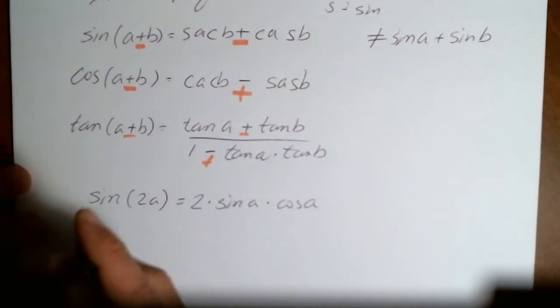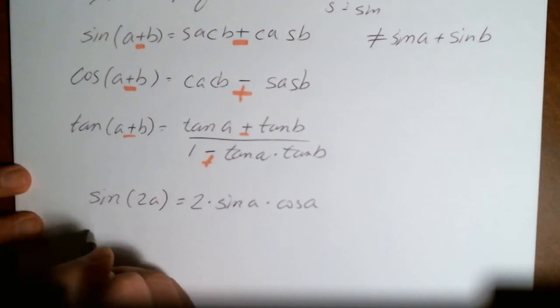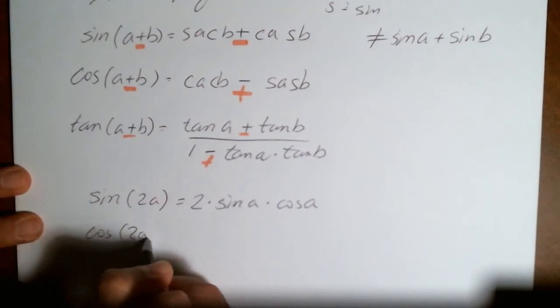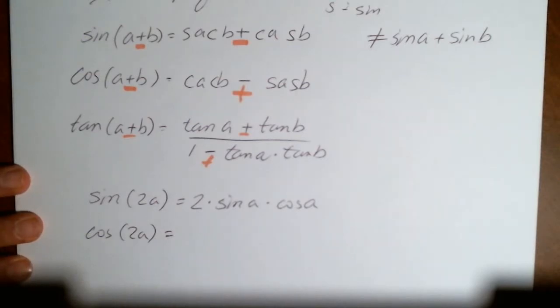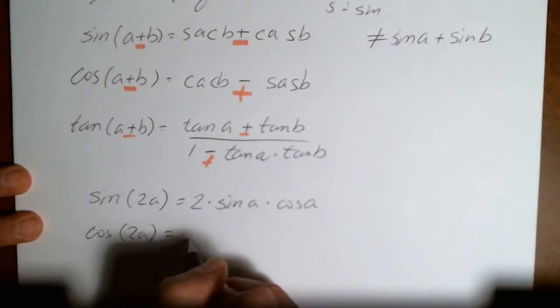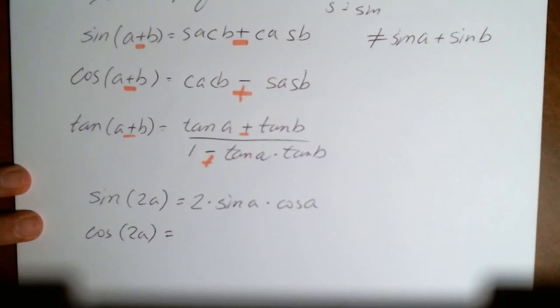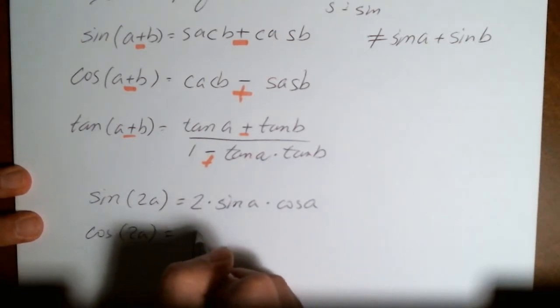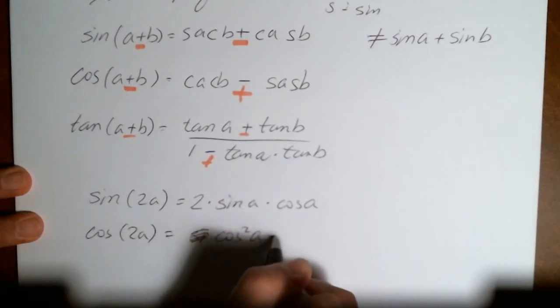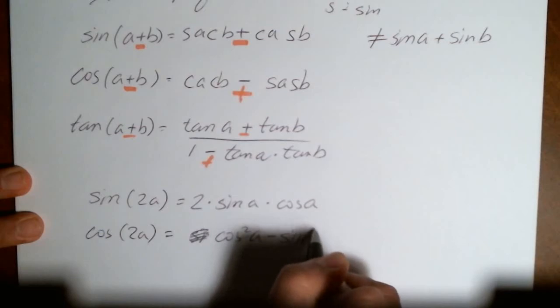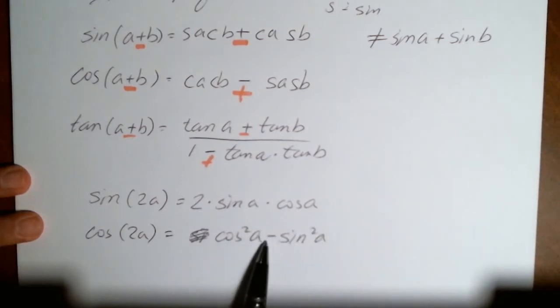The tangent of 2, I mean, excuse me, the cosine of 2A comes in three different flavors. I'm not going to derive these. I'm just going to have you memorize it. The first one is like the Pythagorean theorem, and you're going to make it, which is going to be the cosine squared of A minus the sine squared of A.